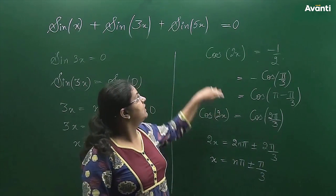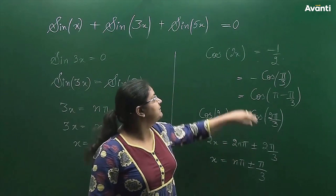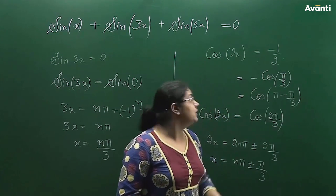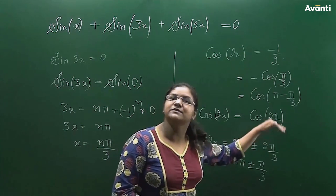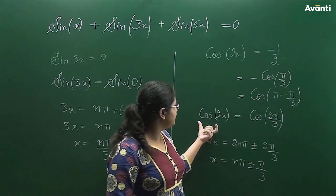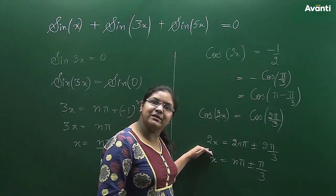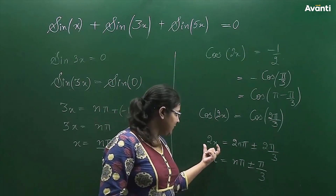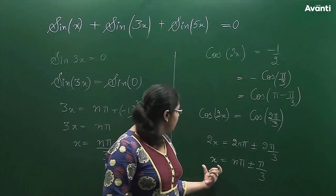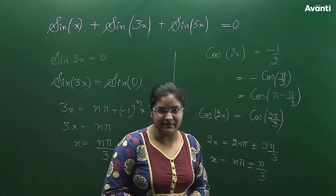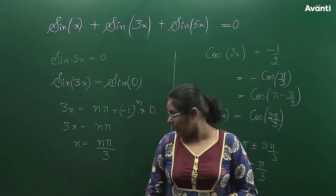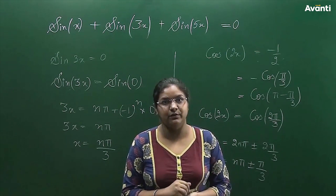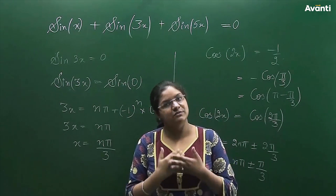For sin(3x) = 0, I write the general formula: sin(3x) = sin(0), since sin(0) = 0. So the general solution is 3x = nπ + (−1)ⁿ · 0, which gives x = nπ/3. For the second equation, cos(2x) = −1/2. I write 1/2 as cos(π/3), and since it is negative, cos(2x) = cos(π − π/3) = cos(2π/3). The general solution is 2x = 2nπ ± 2π/3, so x = nπ ± π/3. The overall general solution is the union of these two results. Thank you.